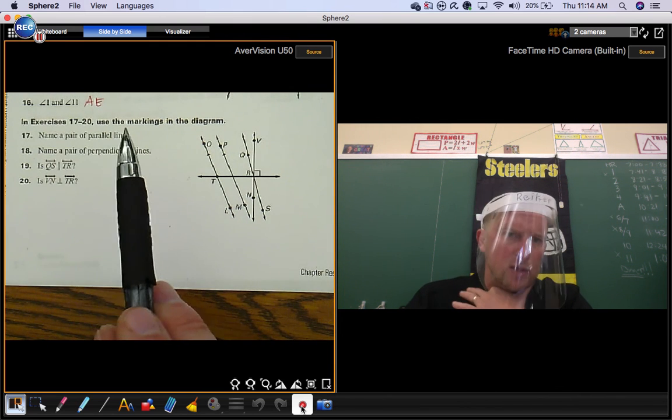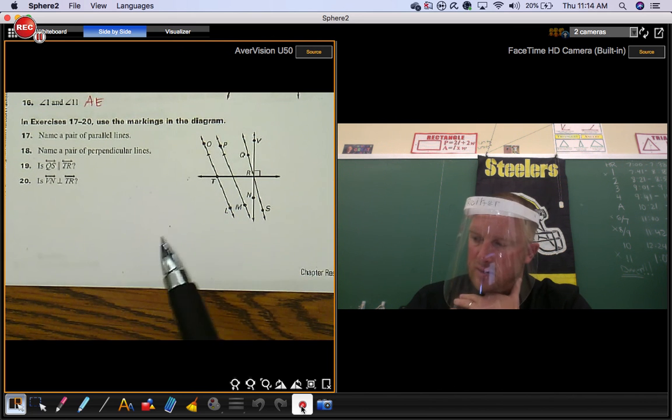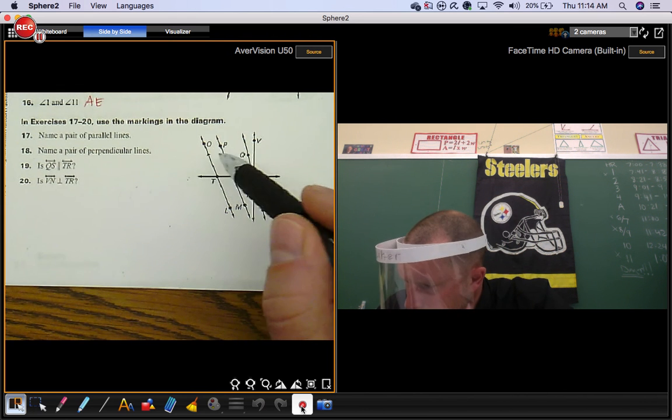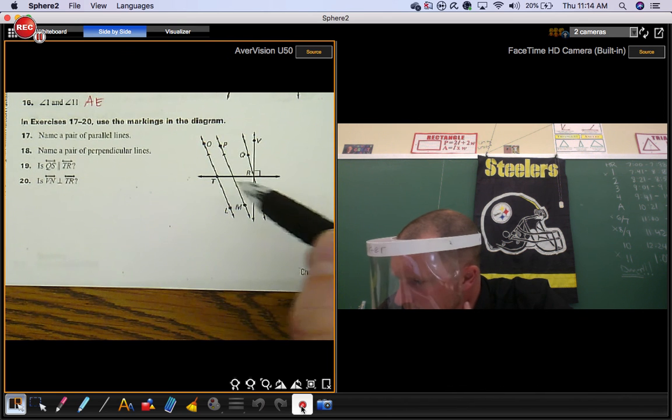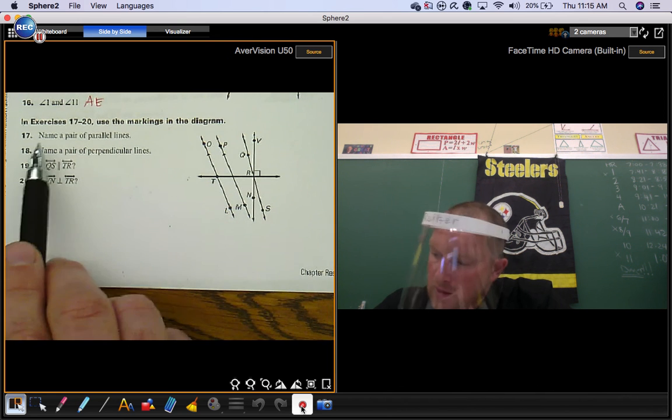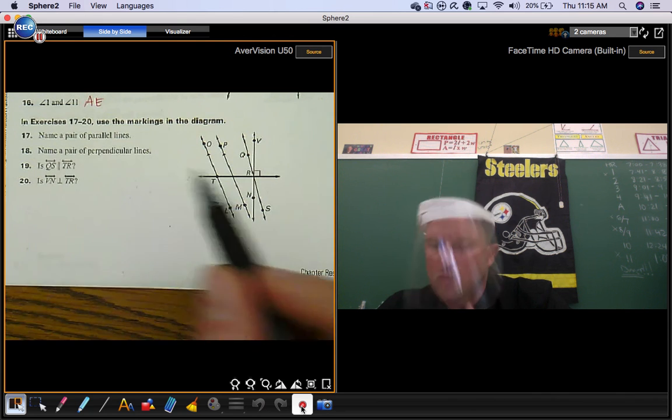For 17 through 20, we're going to use the markings in this diagram. Notice how there are some markings for parallel lines. That's what they want you to do in number 17. Name a pair of perpendicular lines.